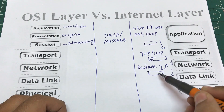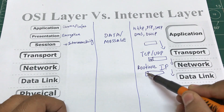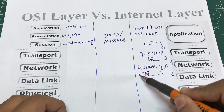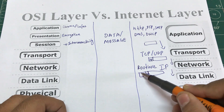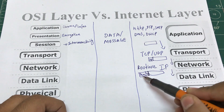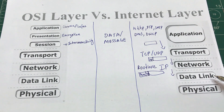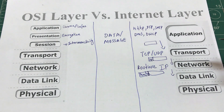The network layer also adds its own header to the data. So now you have the original message, plus the transport layer header HT, plus the network layer header HN containing IP address information. The data link layer is, in my opinion, one of the most important layers because it has two jobs.